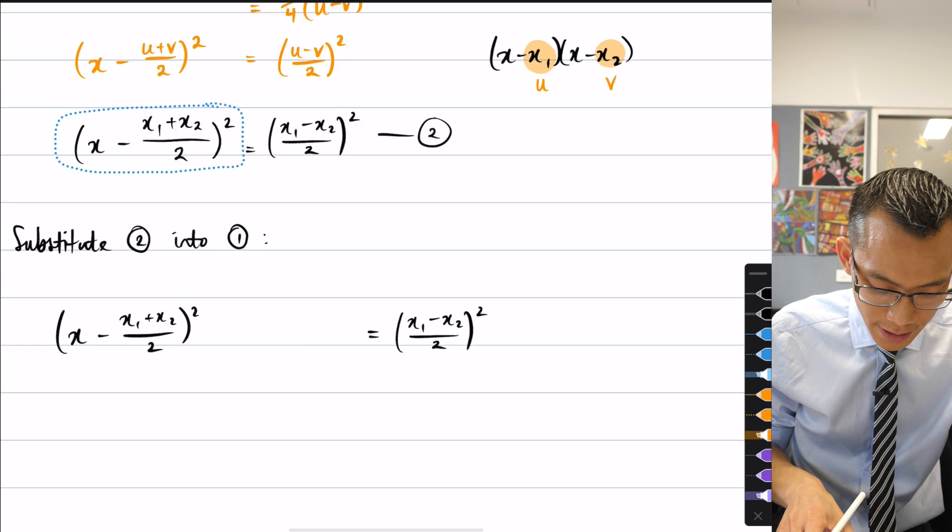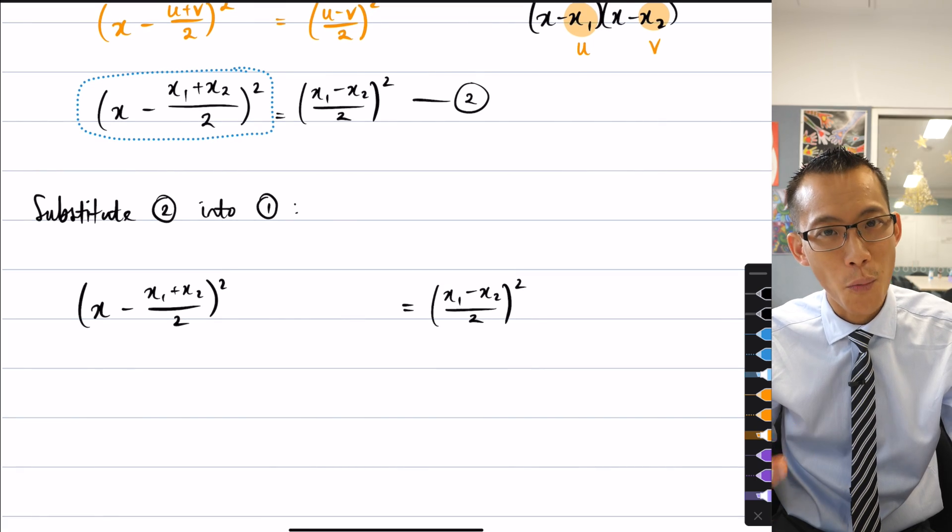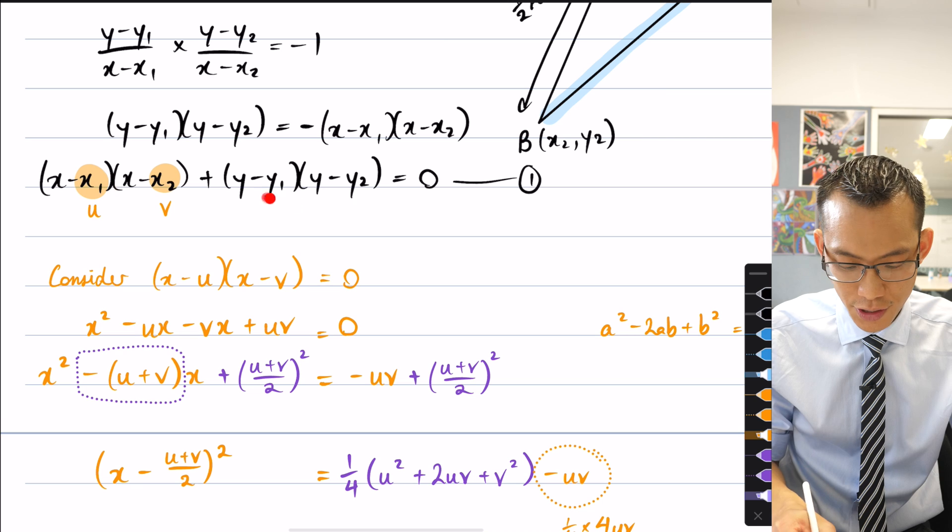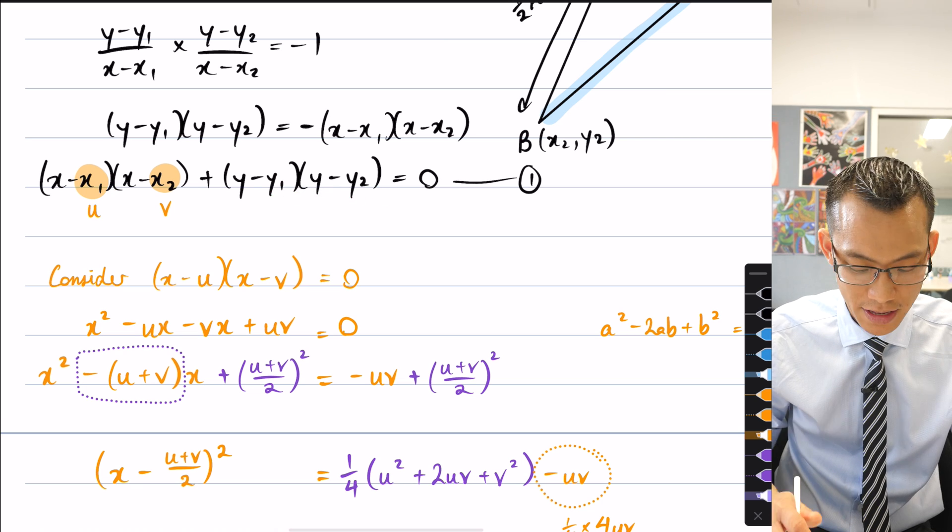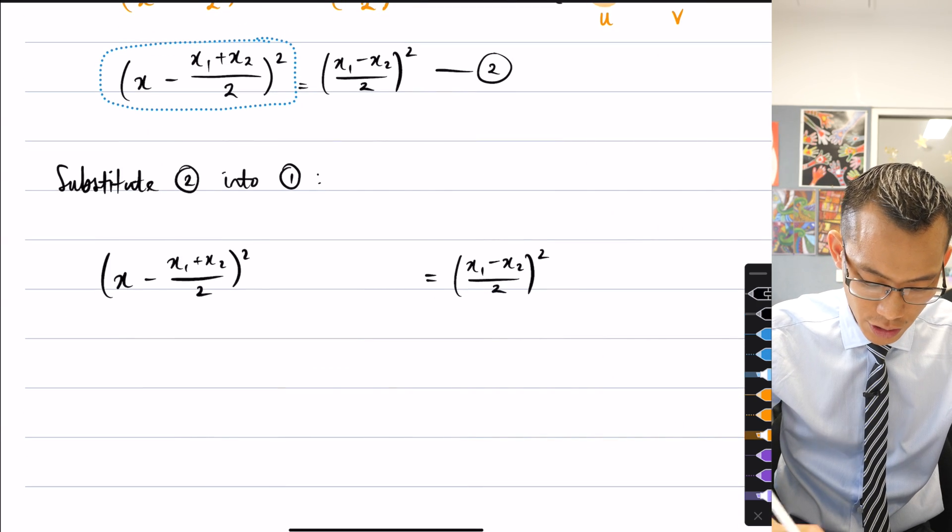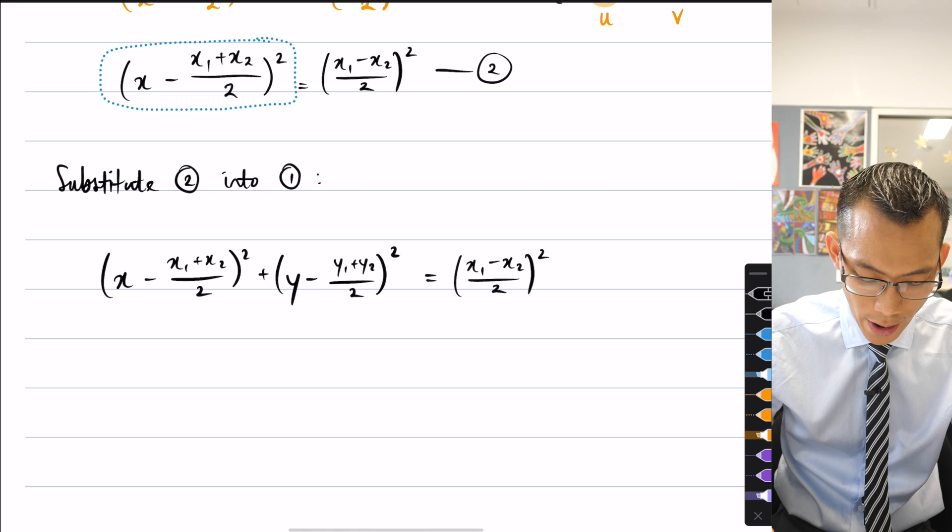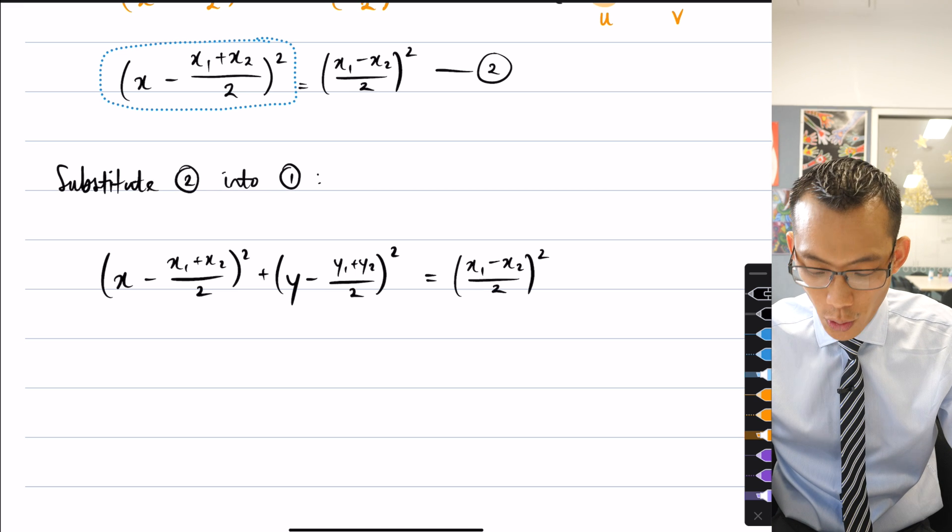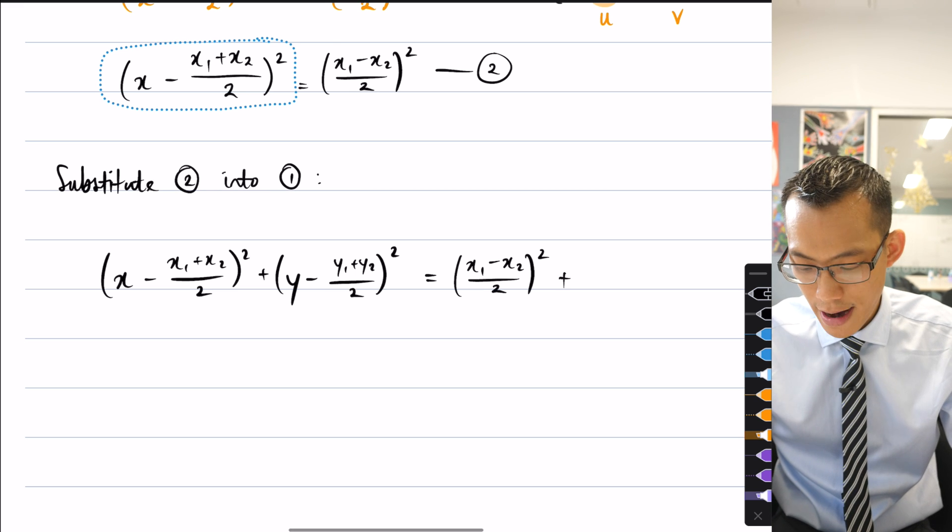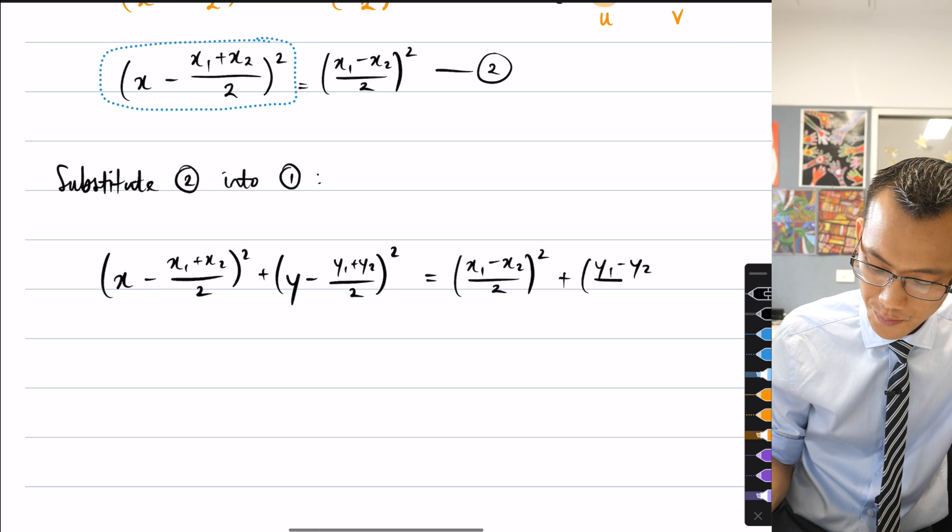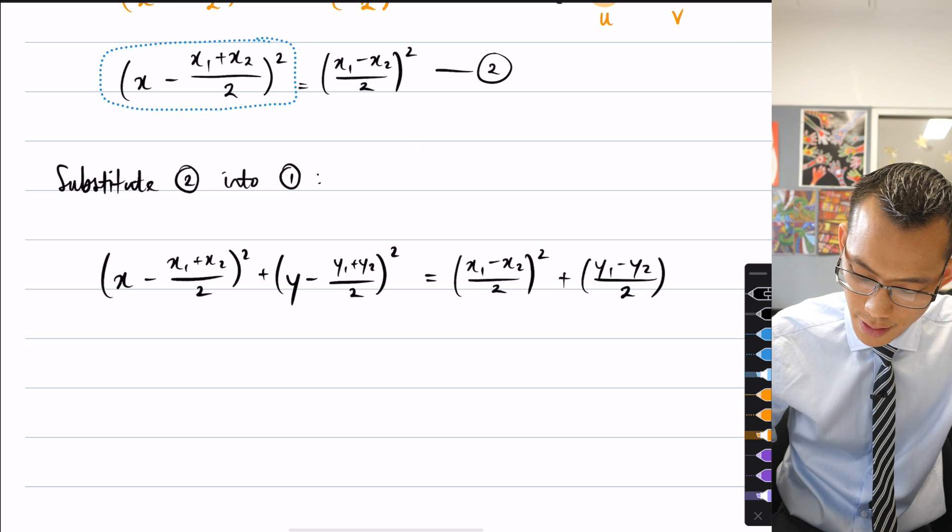But then remember everything that we did for x, we can do for y as well, because it's exactly the same thing here. It's just repeated over there with y's instead of x's. So everything that I just wrote, I can say it again for y minus y1 plus y2 all over 2 squared. So I've got the equivalent part on the left. I also need the equivalent part on the right. So it's just going to have y's instead of x's.